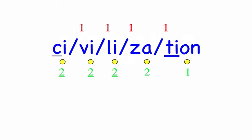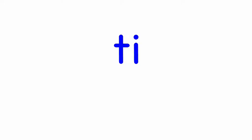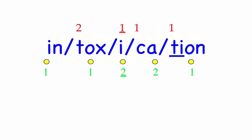Row four. Intoxication. Intoxication is the state of having too many alcoholic drinks. In-tox-i-ca-tion, five syllables. Mark the word. Notice in the second syllable T-O-X: X must stay with the short O sound, and so we have an exception to syllable rule one, and that's why it's underlined.